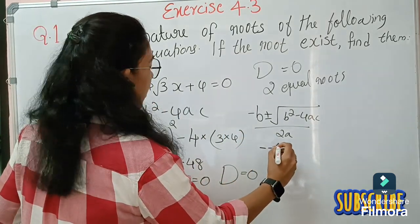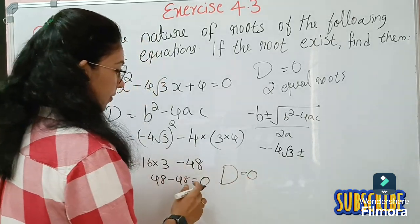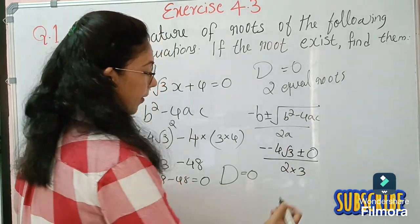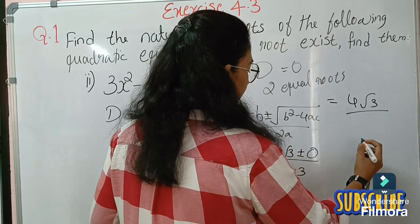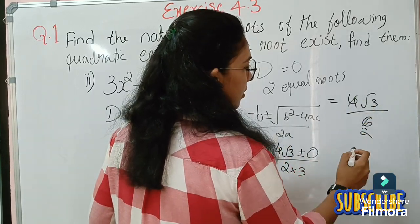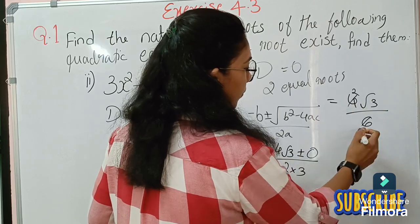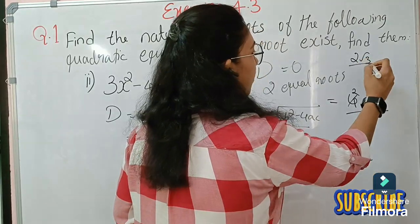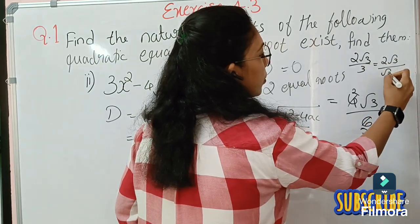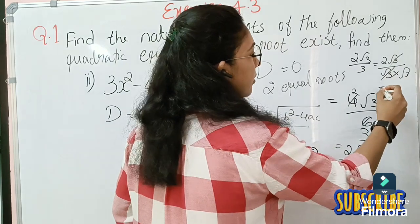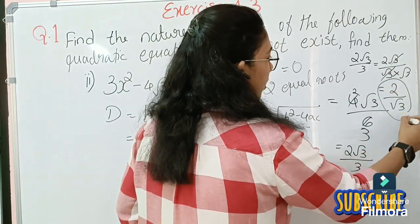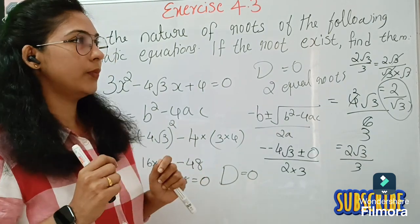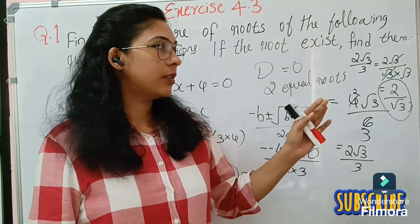Substituting: −B = −(−4√3) = 4√3, and since D = 0, we get x = 4√3 / (2 times 3) = 4√3 / 6 = 2√3 / 3. This simplifies to 2√3 / (√3 times √3) = 2 / √3. So both equal roots are x = 2/√3.